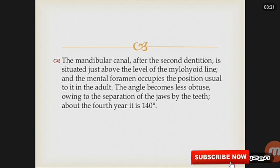The mandibular canal after the second dentition is situated just above the level of the mylohyoid line, and the mental foramen occupies the position usual in the adult. The angle becomes less obtuse owing to the separation of the jaws by the teeth. About the fourth year it is 140 degrees.